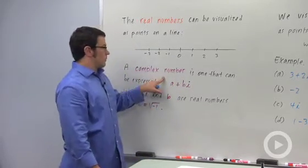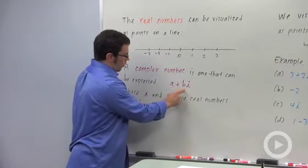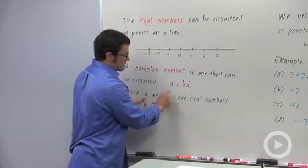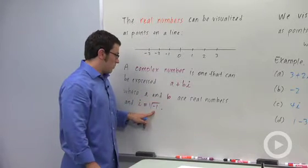Now recall, complex numbers are numbers that can be expressed in the form a plus bi, where a and b, these coefficients, are real numbers, and i is the special number, the square root of negative 1.